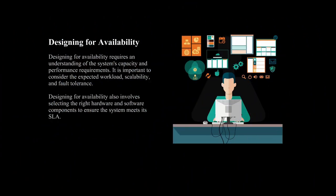Understanding the system's capacity and performance needs is crucial for designing for availability. Think about how much work will be done, how much you'll need to add on, and how many errors there will be. Designing for availability includes picking the right hardware and software so the system can keep its SLA. So, how do we make sure that the architecture of our software is built with availability in mind?